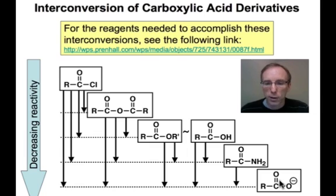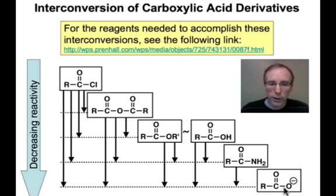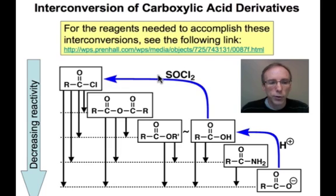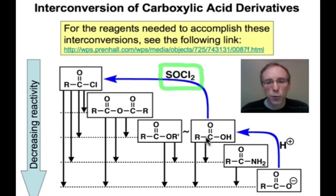But what if we were at the bottom and wanted to transform that group into something above it in this reactivity trend? How would we do that? Well, if we're at the very bottom, the possibility of just adding a proton will get us to the carboxylic acid. And from there, there's a special reagent known as thionyl chloride, or SOCl₂, whose structure we'll see on the next slide, which is capable of transforming that carboxylic acid into the very reactive acid chloride.